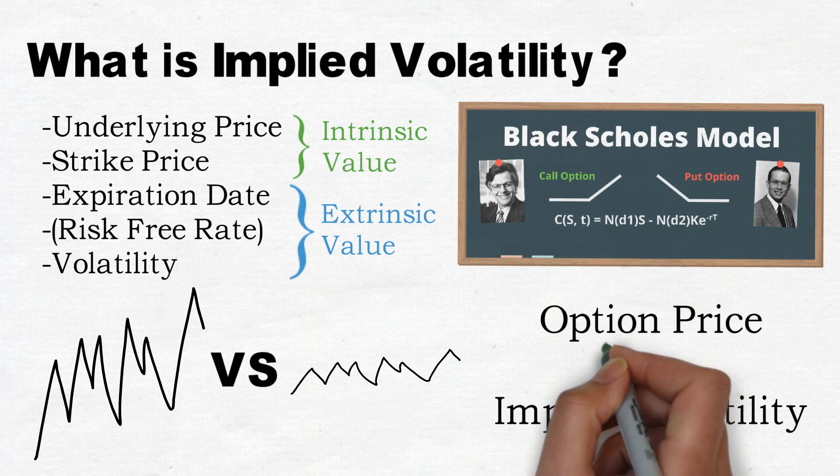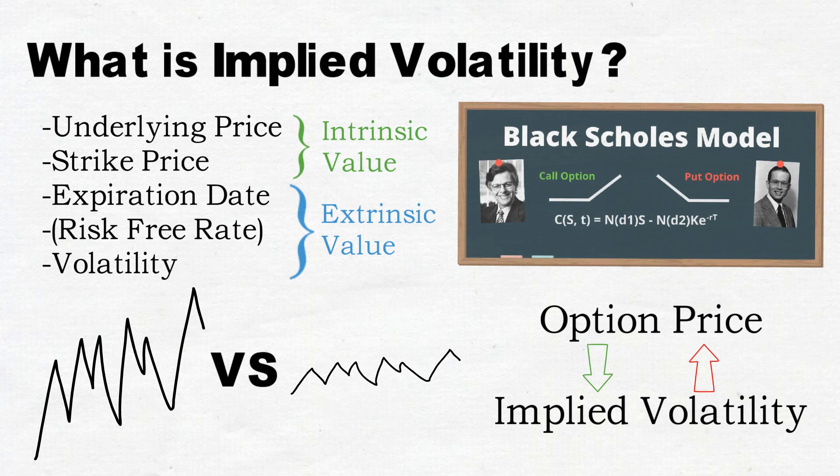That's why models such as the Black-Scholes model use a formula to determine the implied volatility from the options price instead of the options price from the implied volatility. An options price can be observed in the markets together with all the other factors except for volatility.